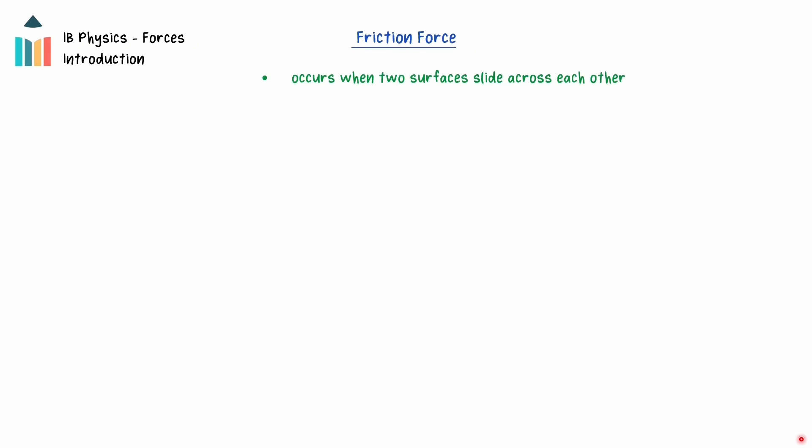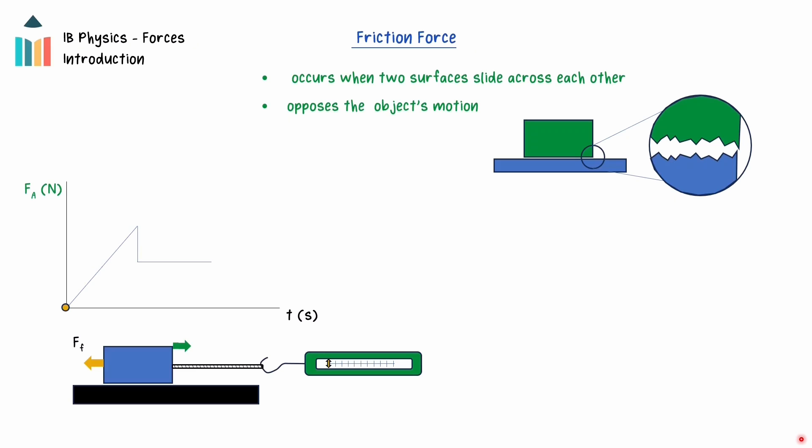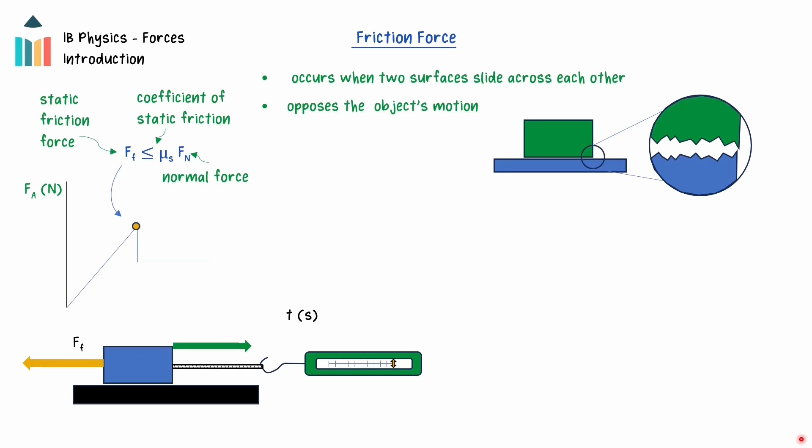Friction is a force that occurs parallel to the plane of contact when two objects attempt to slide across each other, opposing the motion. It is a result of the surface imperfections and electrostatic interactions between the atoms of the two objects trying to slide across each other. As a result, the friction force will oppose the motion. The normal force is causing the two surfaces to be pressed against each other, and the strength of the normal force affects how strongly the microscopic surface imperfections catch and pull against each other. When an object is at rest on a surface and a force is applied parallel to the surface of contact, a friction force prevents the object from moving. This is the static friction force.